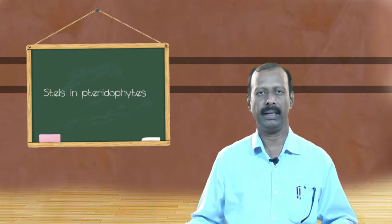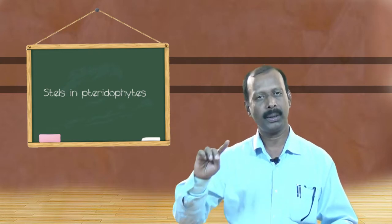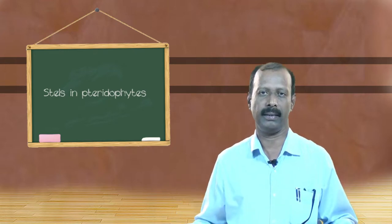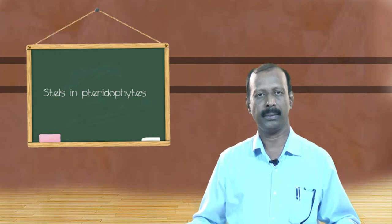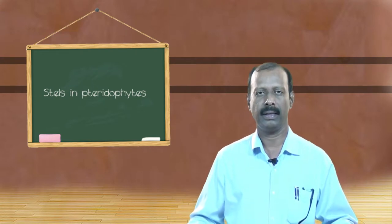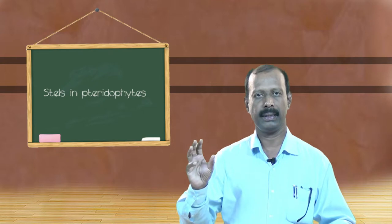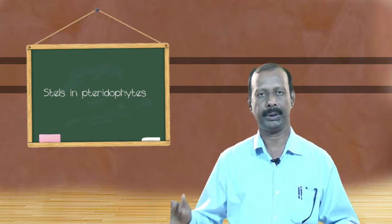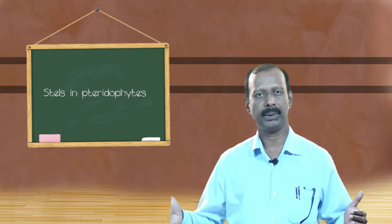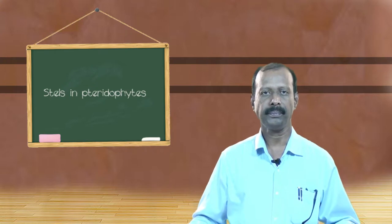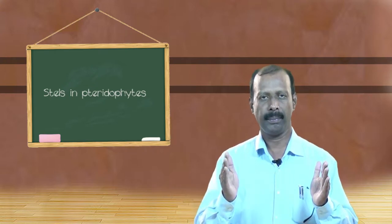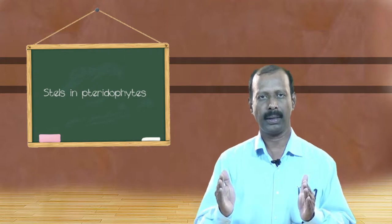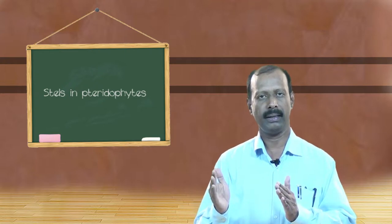The stele is made up of an outermost layer called pericycle, next to which are vascular bundles, and the pith or ground tissue. Pith is also known as medulla. So essentially, the stele is made up of pericycle, vascular bundles, and the medulla.